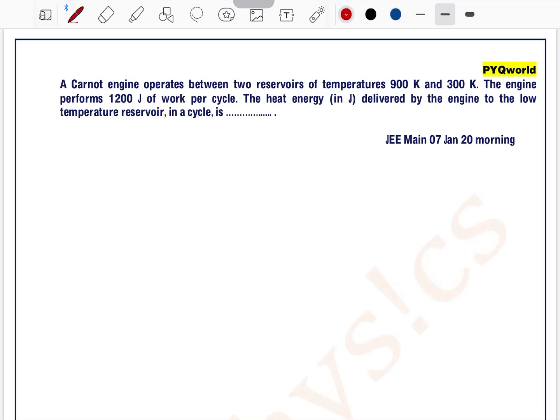A Carnot engine operates between two reservoirs of temperature 900 Kelvin and 300 Kelvin. So here higher temperature is T1 which is equal to 900 Kelvin, lower temperature T2 which is equal to 300 Kelvin.